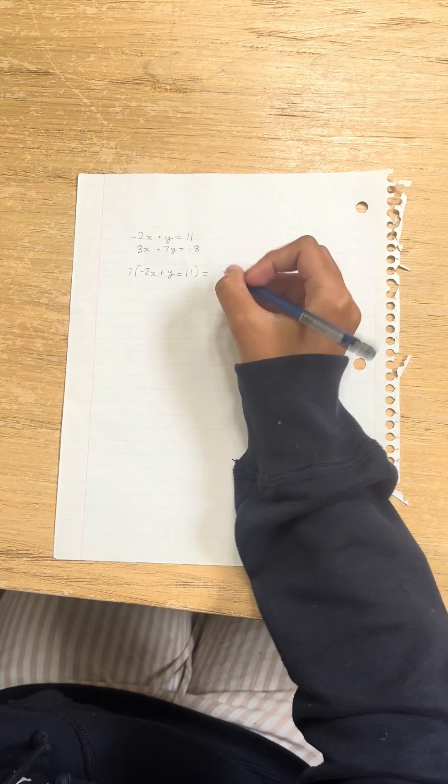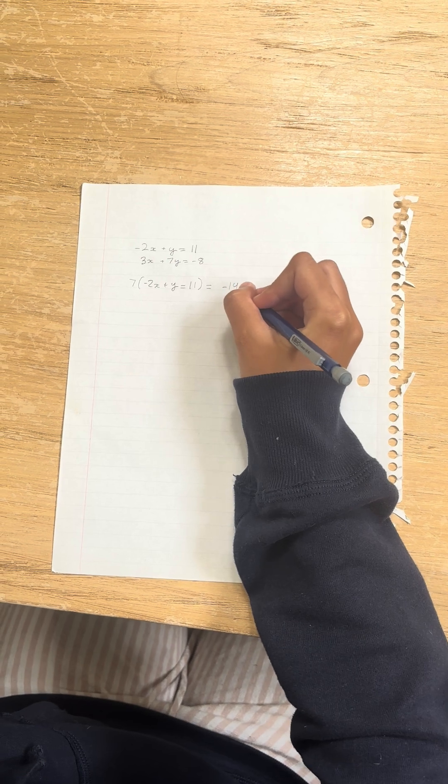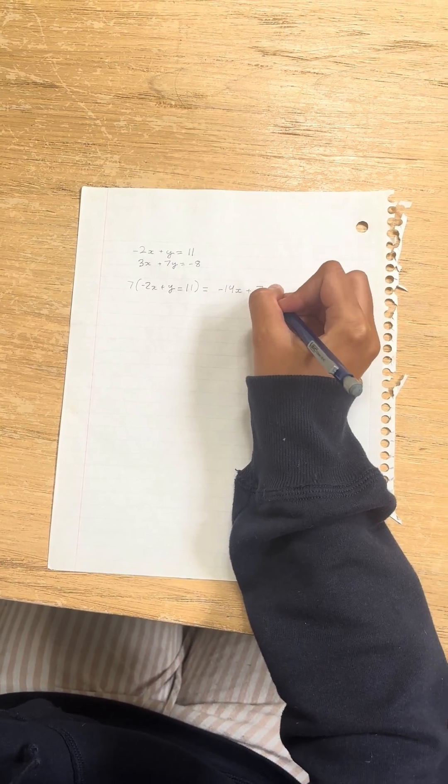And the equation will become minus 14x plus 7y equals 77.